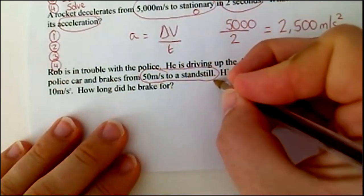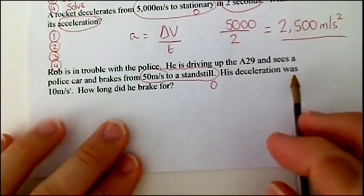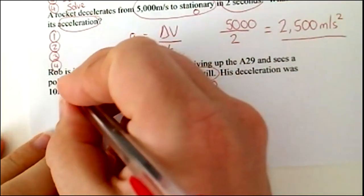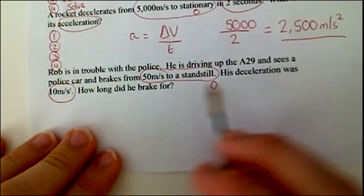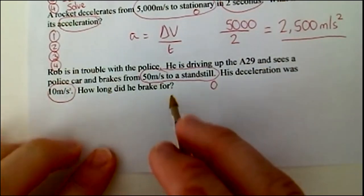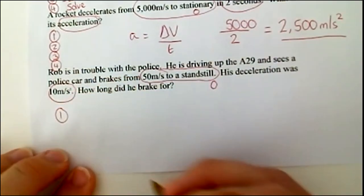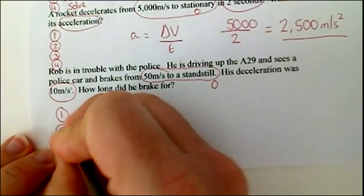His deceleration was ten metres per second squared. Deceleration is just slowing down. How long did it take him to brake? So we've done step one we bugged it, step two again write your equation out.